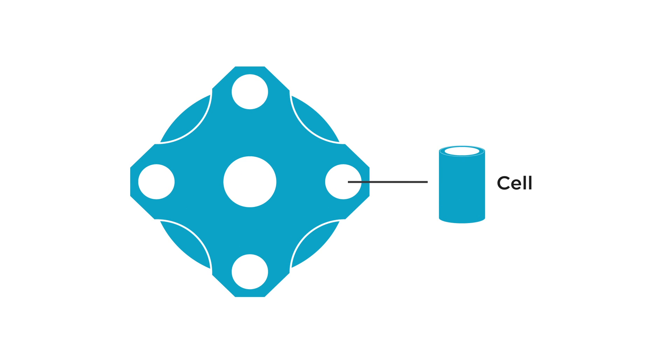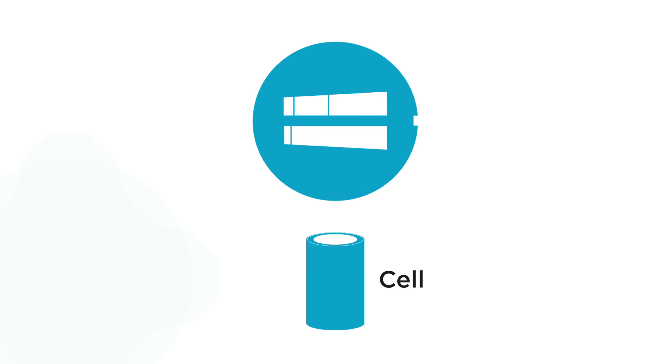A centrifuge cell containing the sample is placed in the rotor for analysis. A variant of the centrifuge cell, a double sector cell, enables reference materials to be placed in a cavity alongside the sample, allowing the absorbance of the solvent to be corrected.